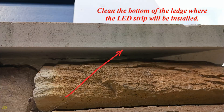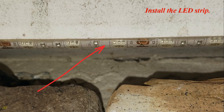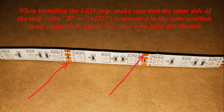Clean the bottom of the ledge where the LED strip will be installed, then install the LED strip. When installing the LED strip, make sure that the same side of the strip with V+ (plus 12 volts) is mounted in the same position in all segments to obtain the same even light distribution.